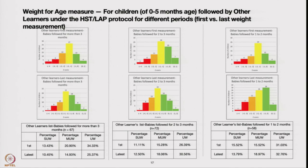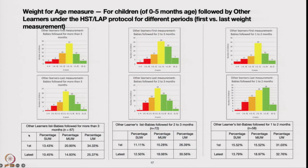For children zero to five months followed by other learners — those not selected because they had not followed the protocol or were not teaching mothers correctly — even those who adopted mothers for more than three months showed some reduction, though not as much. For babies adopted for only two to three months, you can see growth faltering increasing across all three categories. For one to two months of follow-up, growth faltering also increased, except for HCW. This was the reason they were not selected as super mentors.